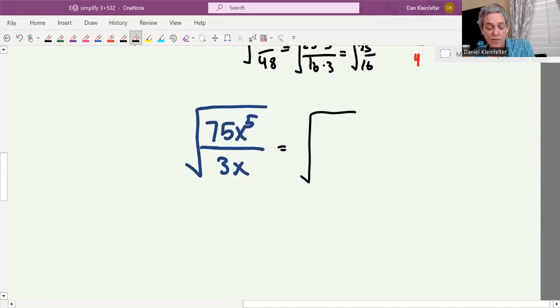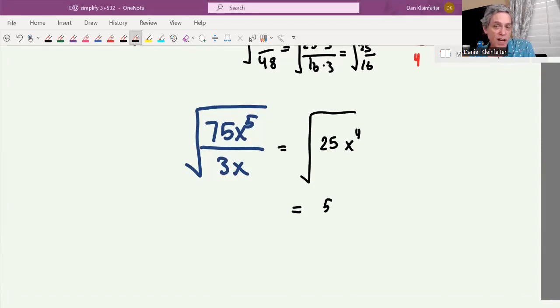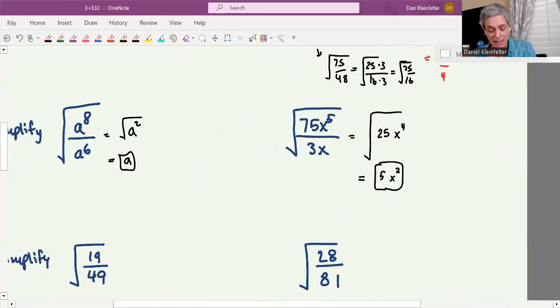Here's 75x to the fifth divided by 3x. Once again, this one I think it's going to be better if we simplify first. 75 divided by 3 is 25, x to the fifth divided by x is x to the fourth. And then we can simplify that. The square root of 25 is 5, and the square root of x to the fourth is x squared.